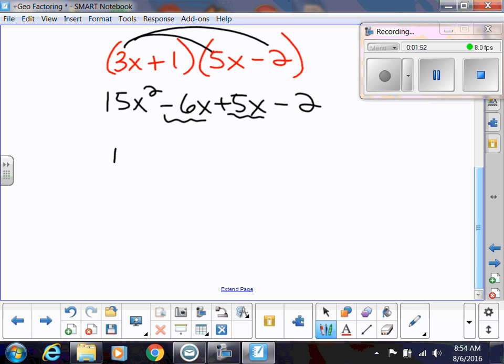So I'm going to have 15x squared. When I combine those, I'm going to get negative 1x and then minus 2. So how this is going to differ than the previous time is I cannot just look at this last term. This last term, the negative 2, that came about when I did my last term. So the 1 times the negative 2. But notice that I also have this 15x squared. That came about when I did my first.